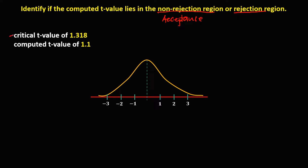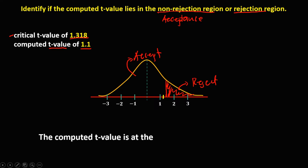For the first given, the critical t-value is positive 1.318. This area beyond positive 1.318 is the rejection region, and this area is the acceptance region. The computed t-value is positive 1.1, and 1.1 lies in the acceptance region. Therefore, the computed t-value is at the acceptance region.